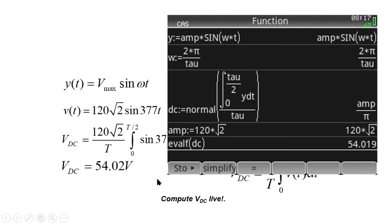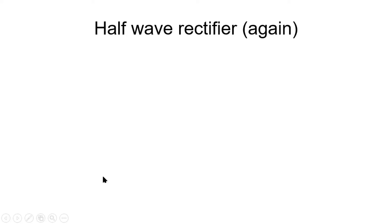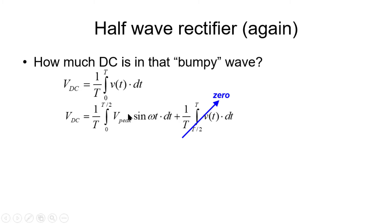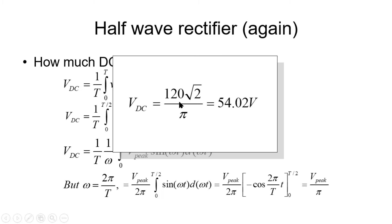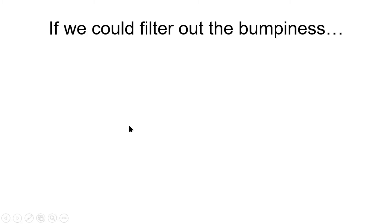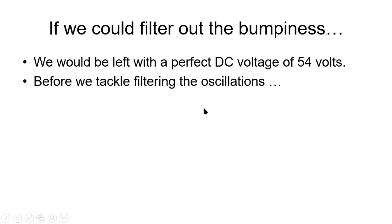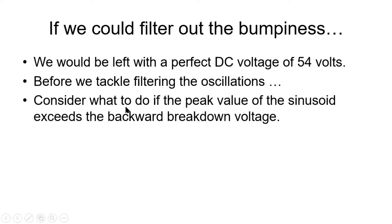If we could get rid of the bumpiness — the ripple — of that output voltage, we would end up with a wonderfully smooth 54 DC volts. The DC component of the half-wave rectifier output is V_max/π, as shown. If only we could filter out the ripple in that output wave, we would be left with a perfect DC voltage of 54 volts. Before we tackle the issue of filtering the oscillations, let's consider what to do if the peak value of the sinusoid exceeds the reverse breakdown voltage of the diode.